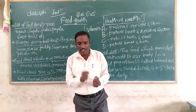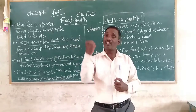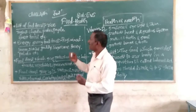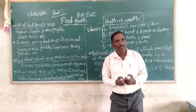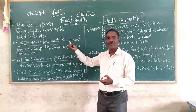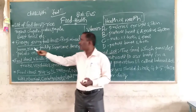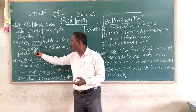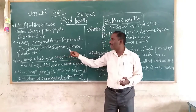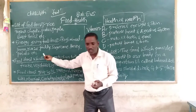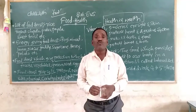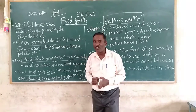Next, energy-giving food items — which are the foods that give energy to our body? First one: ragi, wheat, jowar, paddy, sugar cane, potato. These are the energy-giving food items for our body.